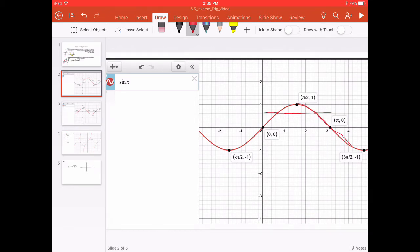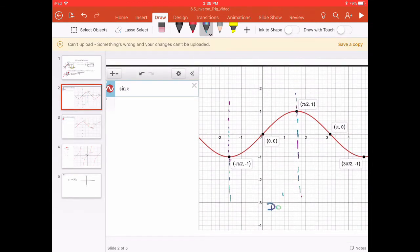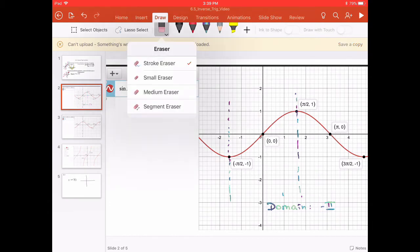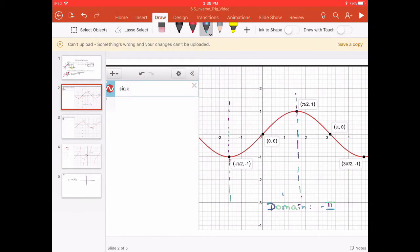So when I refer to be invertible, we restrict the domain. We let the domain be from negative π over 2 to positive π over 2, also known as quadrants 1 and 4.